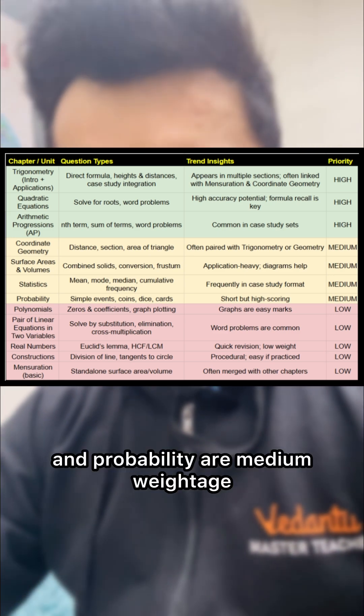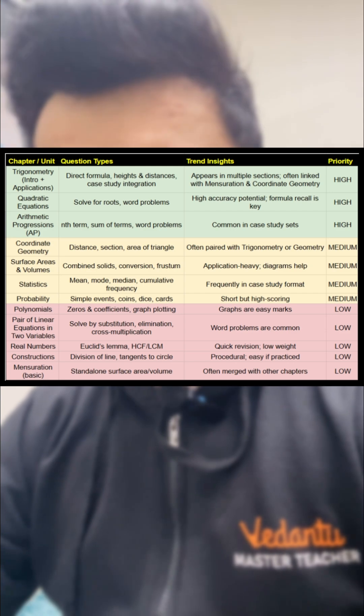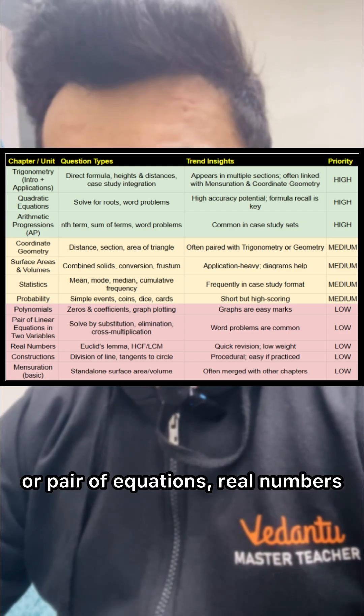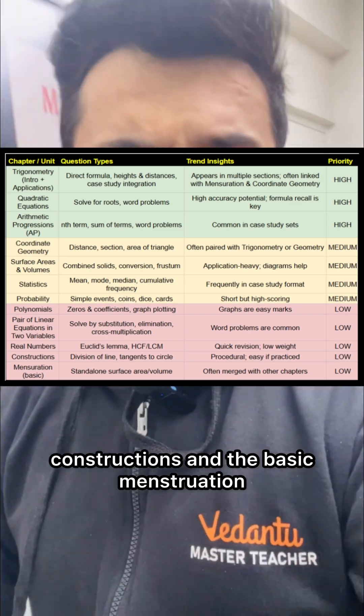Other than that statistics and probability are medium weightage whereas low weightage will be polynomials or pair of equations, real numbers, constructions and the basic mensuration.